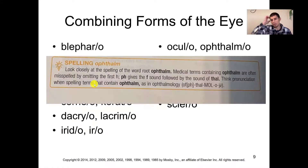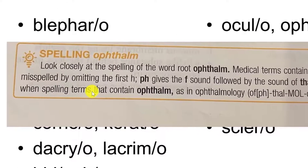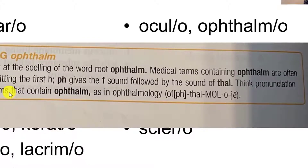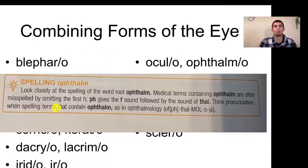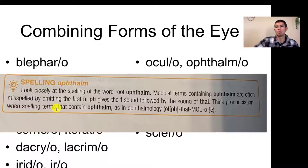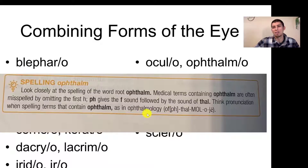One thing to point out: when looking at the term ophthalmo, notice the pronunciation — ophthalmo. I'm putting emphasis on the PH making that F sound. Many people mispronounce it by saying the P, but the P is silent when combined with H, so it makes the F sound: ophthalmo. When you see O-P-H-T-H, that's how we pronounce it — such as in ophthalmology, which has that O-F type of sound: ophthalmology.